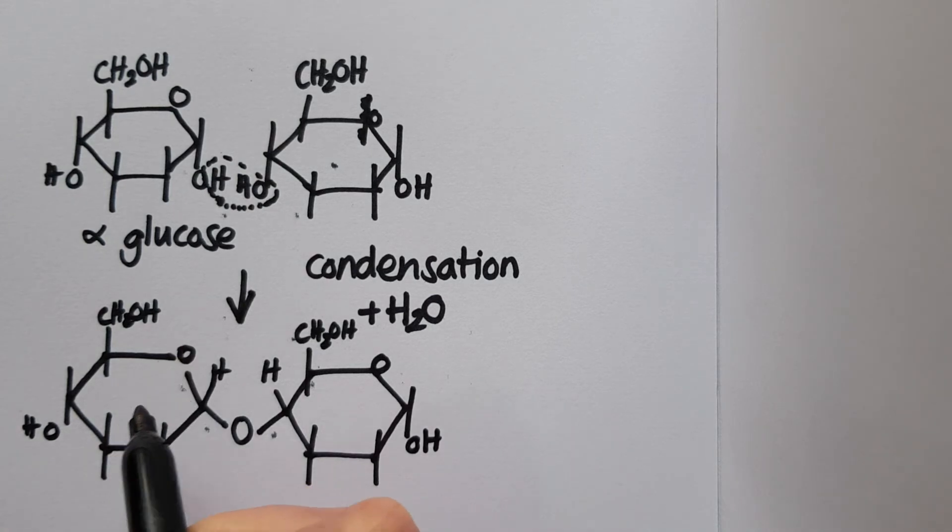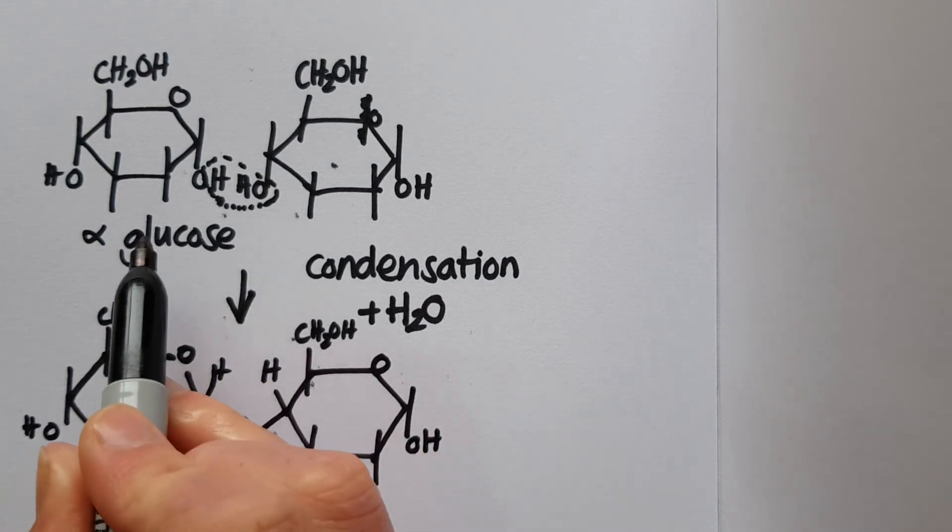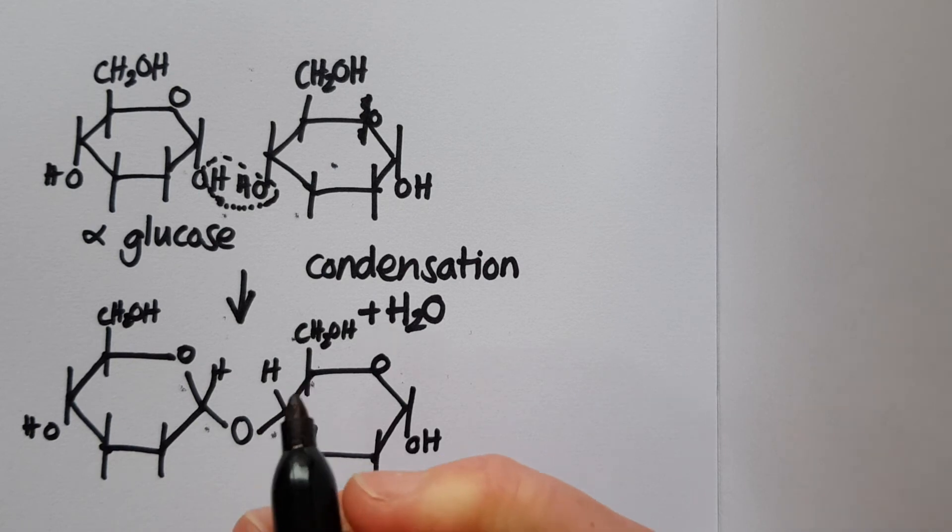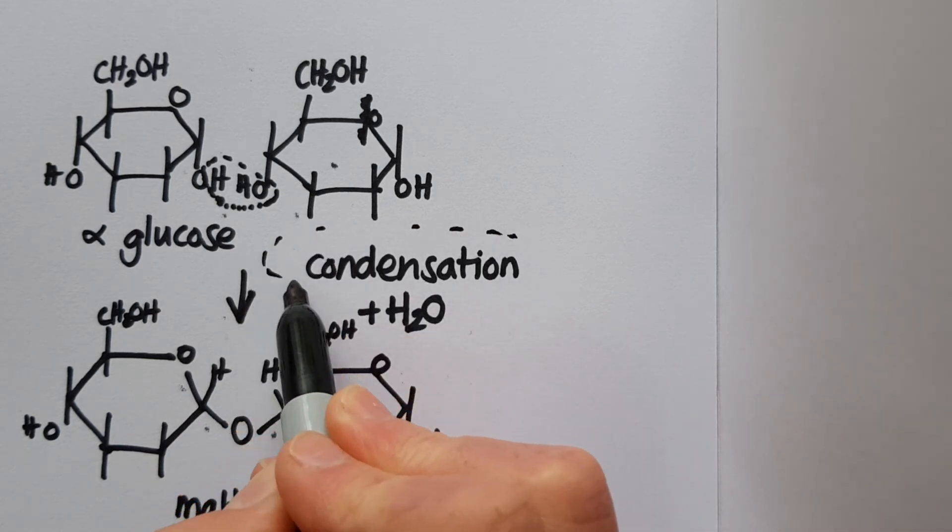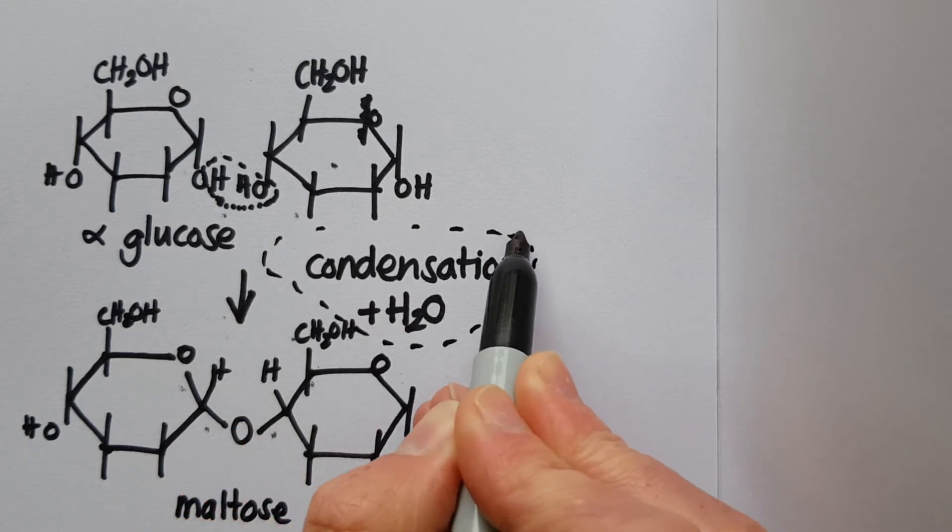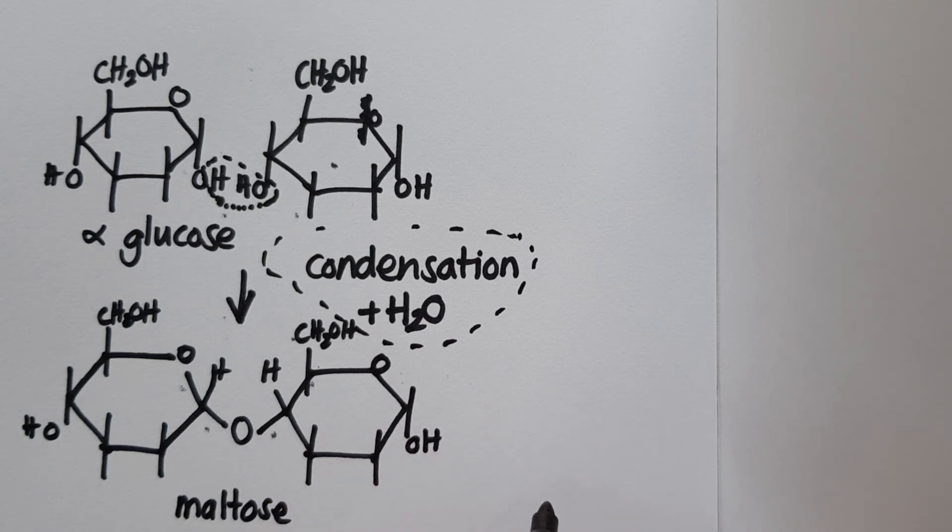What we've got now is two molecules of alpha glucose that have joined together to produce a disaccharide called maltose. We've also produced water in this condensation reaction, and you can see the water has been taken away.